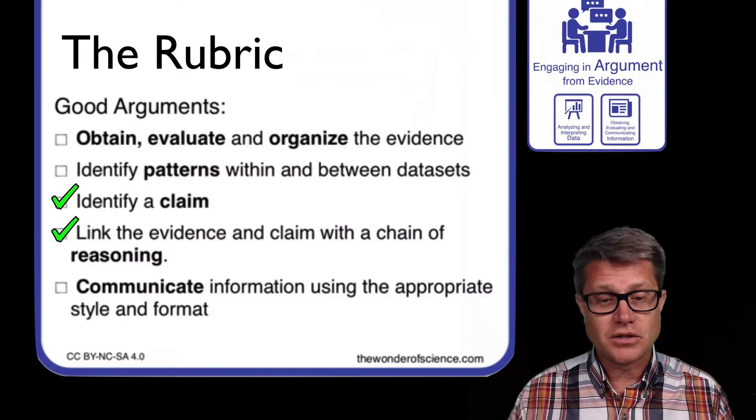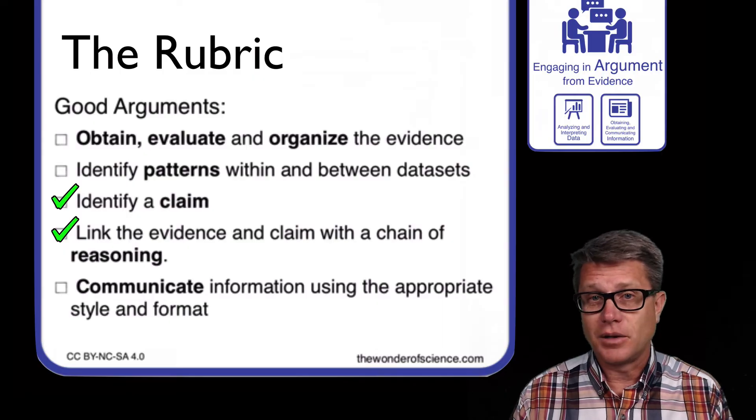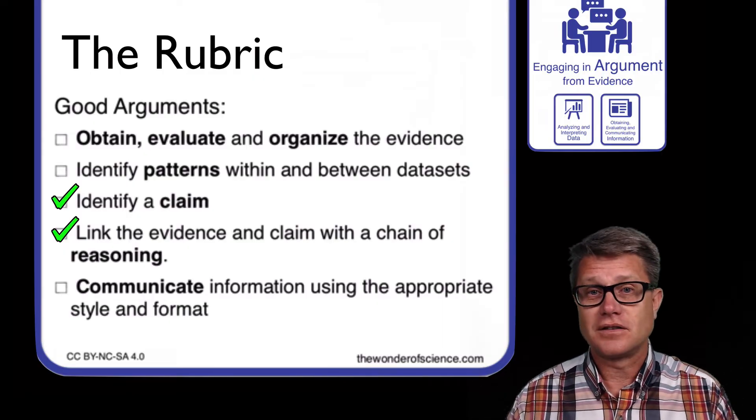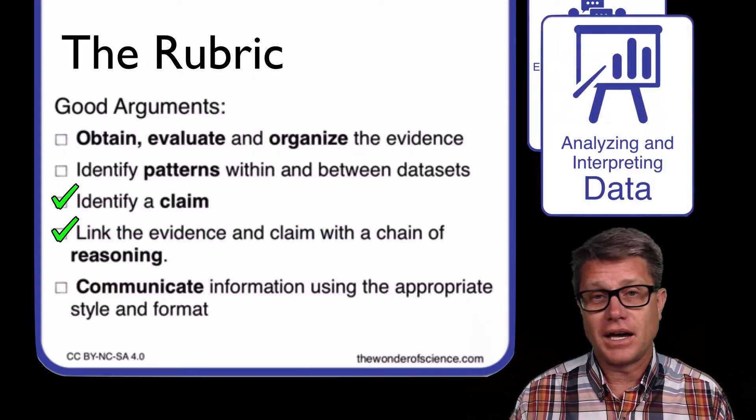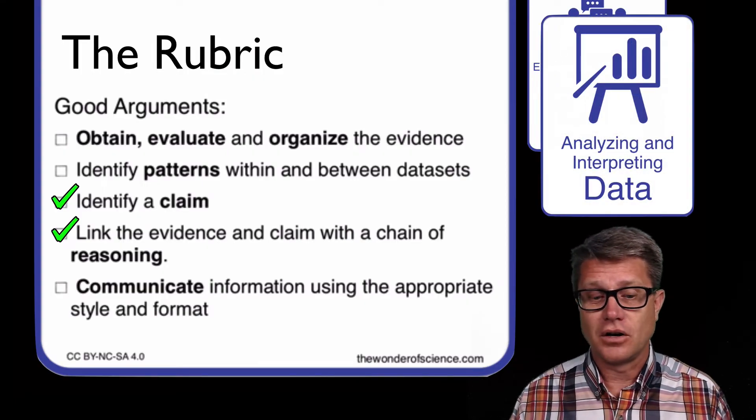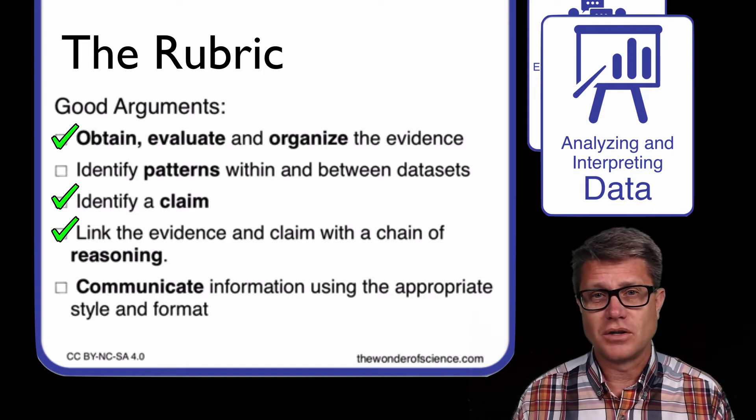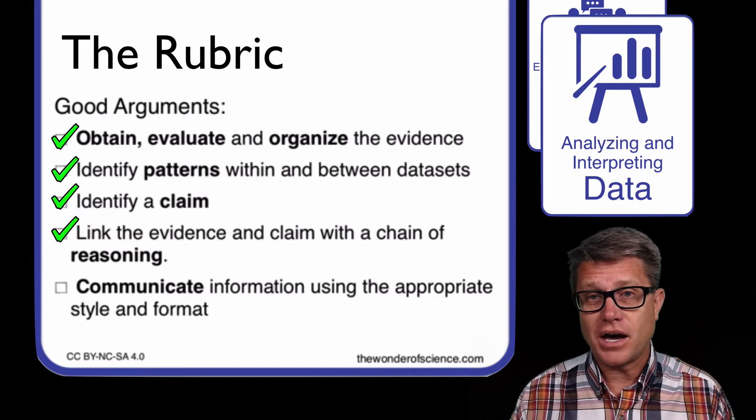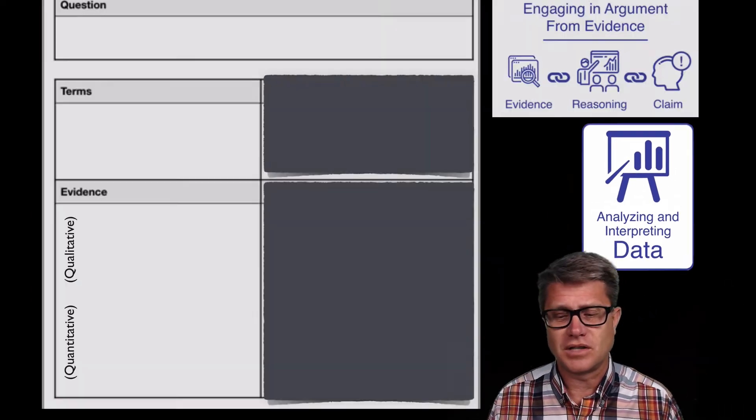Now if we look at the parts of a rubric on a good argumentation, lots of times you're not doing it in the lab. Lots of times in biology or earth science you're going to have to go gather evidence that has already been collected. And therefore the analyzing and interpreting practice is also important. We need to obtain that information. Is this information or is this evidence valid? And then we have to start to see what are the patterns inside data sets and between data sets. What does that mean? Let me give you an example.